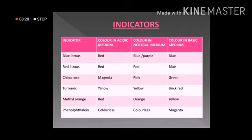Methyl orange is orange in color; it changes to red when it reacts with an acid and changes to yellow when it reacts with a base. Phenolphthalein is colorless and it shows magenta color when it reacts with a basic solution. This is all about indicators and the color changes they show in acidic and basic mediums.